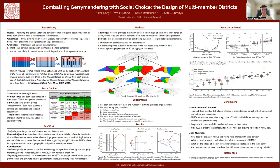Our main result is that small multi-member districts are highly effective in both blunting partisan gerrymandering — that's figure two — and natural gerrymandering, figure three. But only if you don't use winner-take-all voting rules. If you do, then it doesn't really help — that's the center panel here.